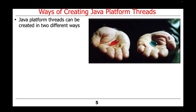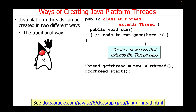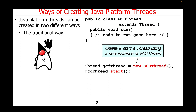A Java platform thread can be created in two different ways. The first way is the traditional way. For example, we could make a new class, GCDThread, that extends the Thread class, and then we could make an instance of this GCDThread class and start the GCDThread, which will launch the thread and have it run the runHook method shown above.